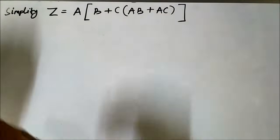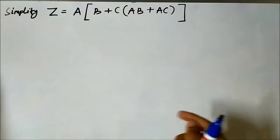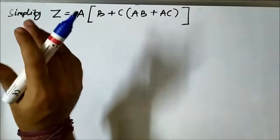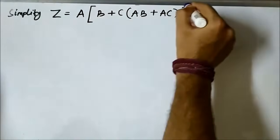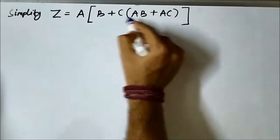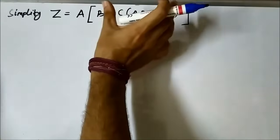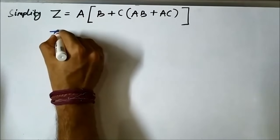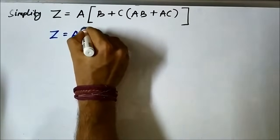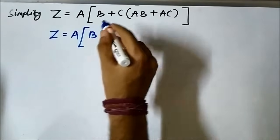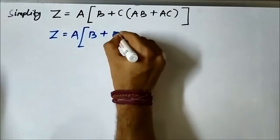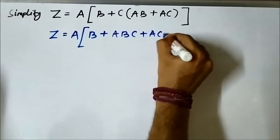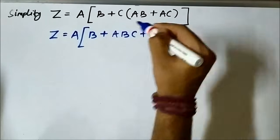Here we have another question related to Boolean simplification. We will keep the square bracket intact and open up the bracket inside to see where we can apply the Boolean algebra rules. So z equals a·b·c plus a·c·c.